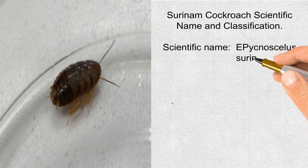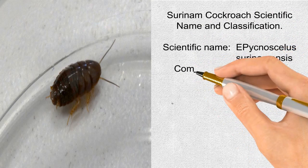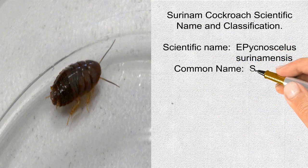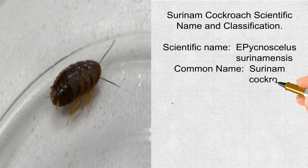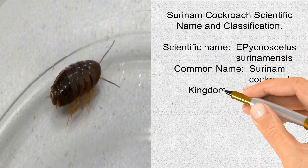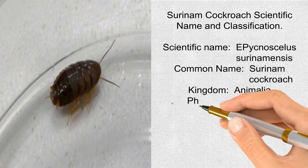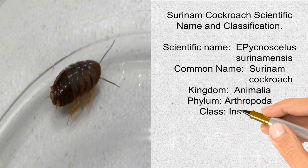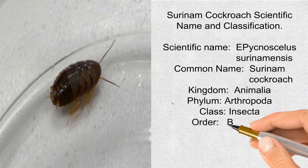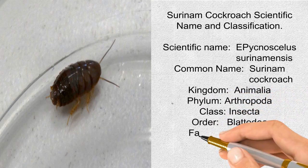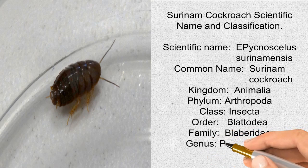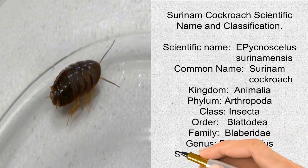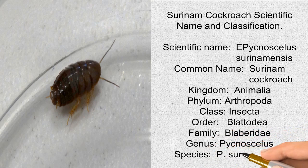Surinam cockroach scientific name and classification: scientific name Pycnoscelus surinamensis, common name Surinam cockroach, kingdom Animalia, phylum Arthropoda, class Insecta, order Blattodea, family Blattidae, genus Pycnoscelus, species Pycnoscelus surinamensis.